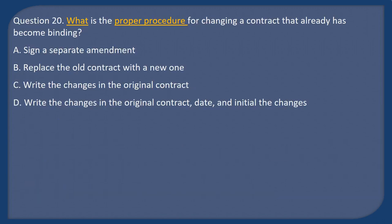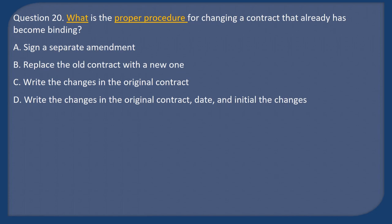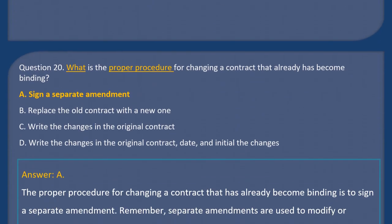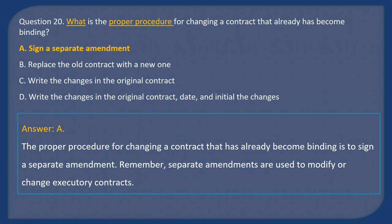Question 20: What is the proper procedure for changing a contract that has already become binding? A) Sign a separate amendment, B) Replace the old contract with a new one, C) Write the changes in the original contract, D) Write the changes in the original contract, date and initial the changes. Answer: A. The proper procedure is to sign a separate amendment. Separate amendments are used to modify or change executory contracts.